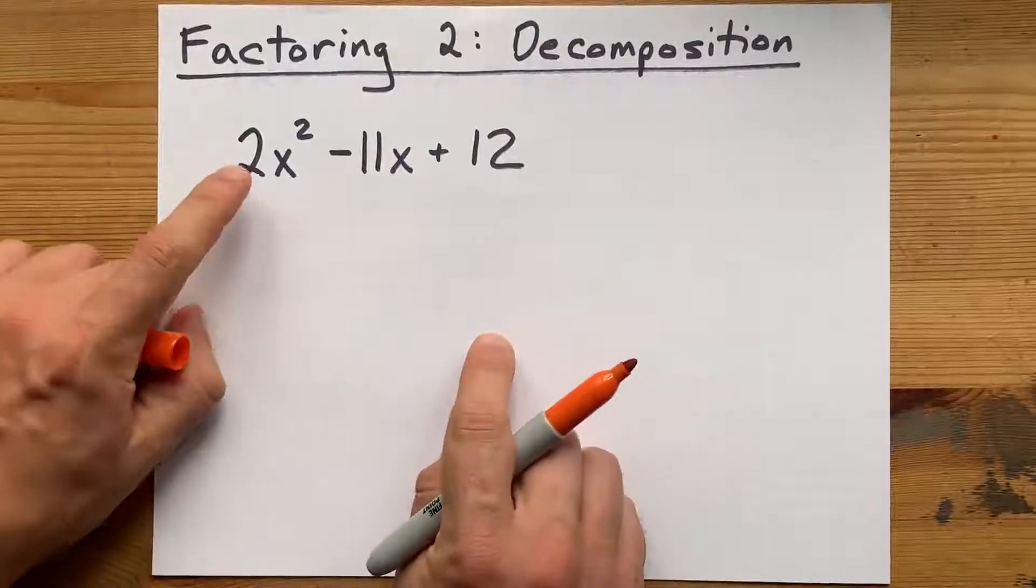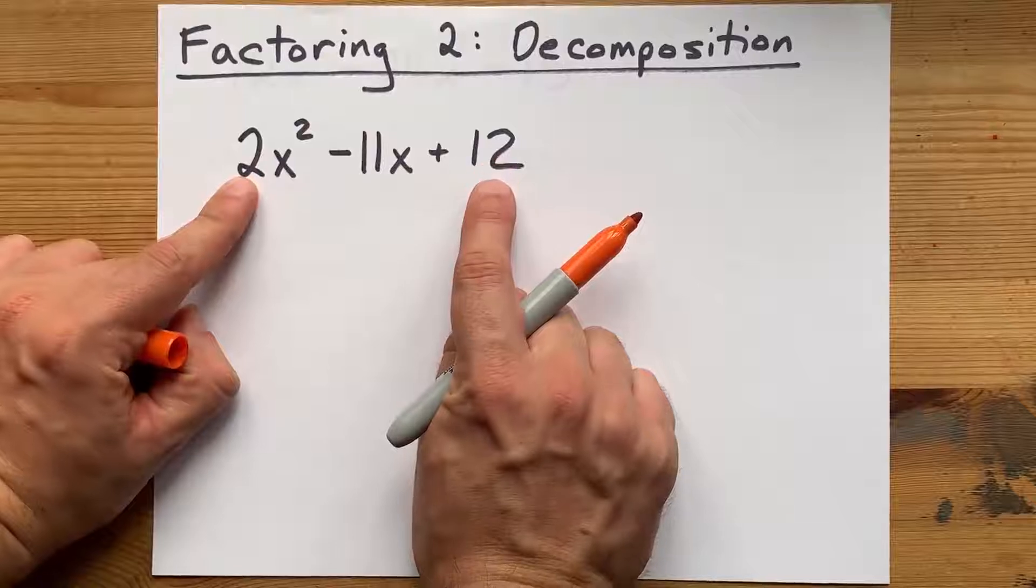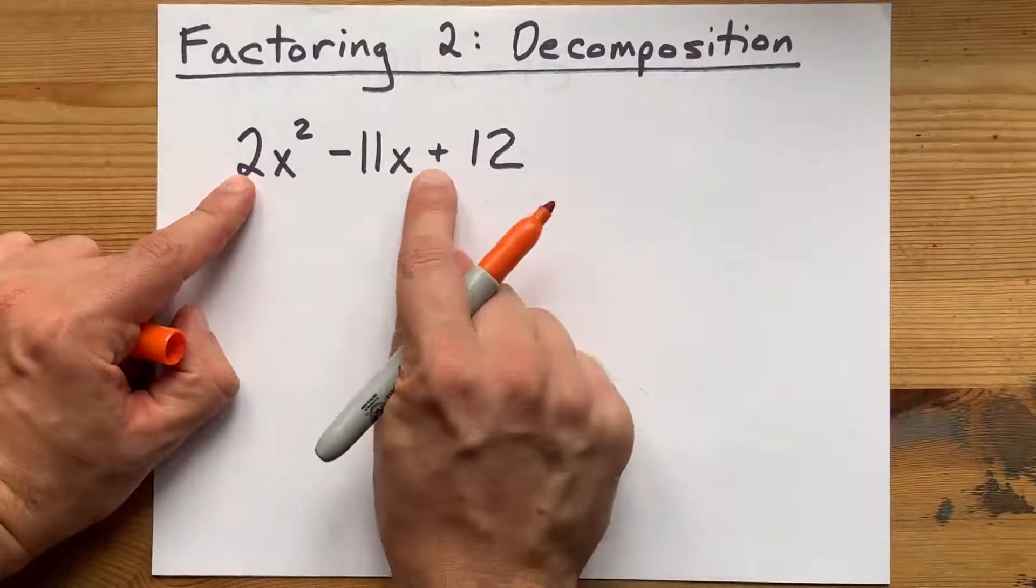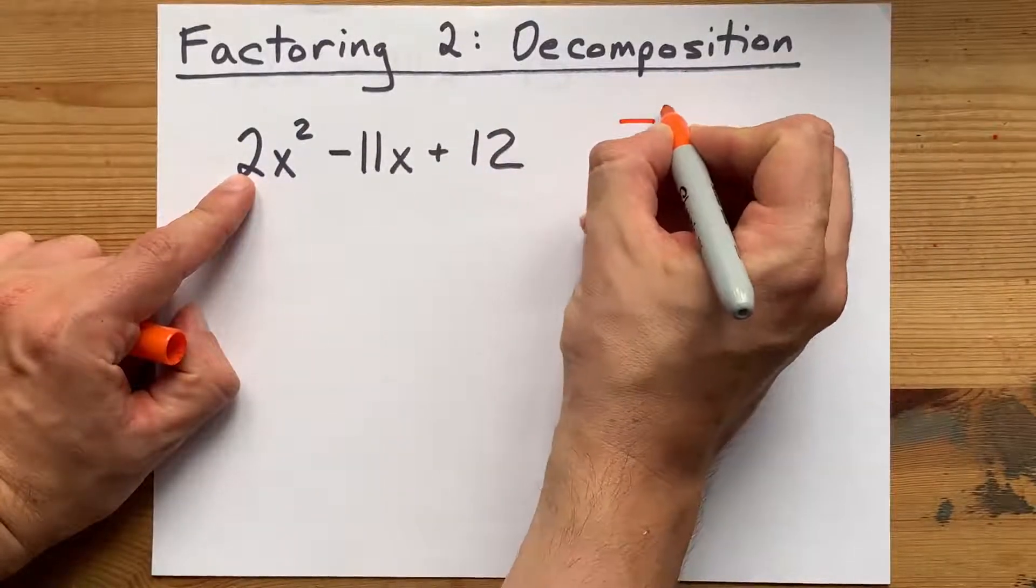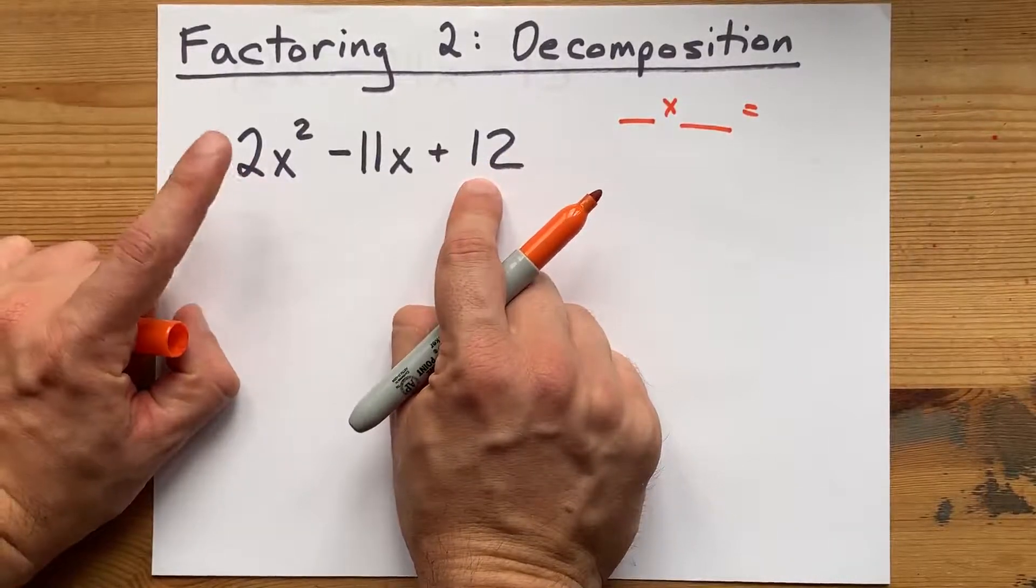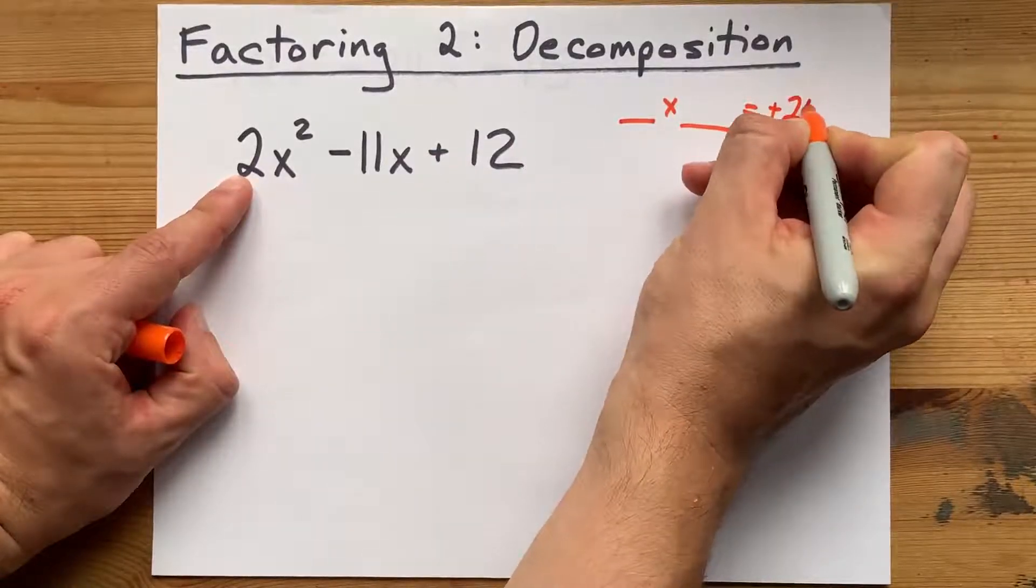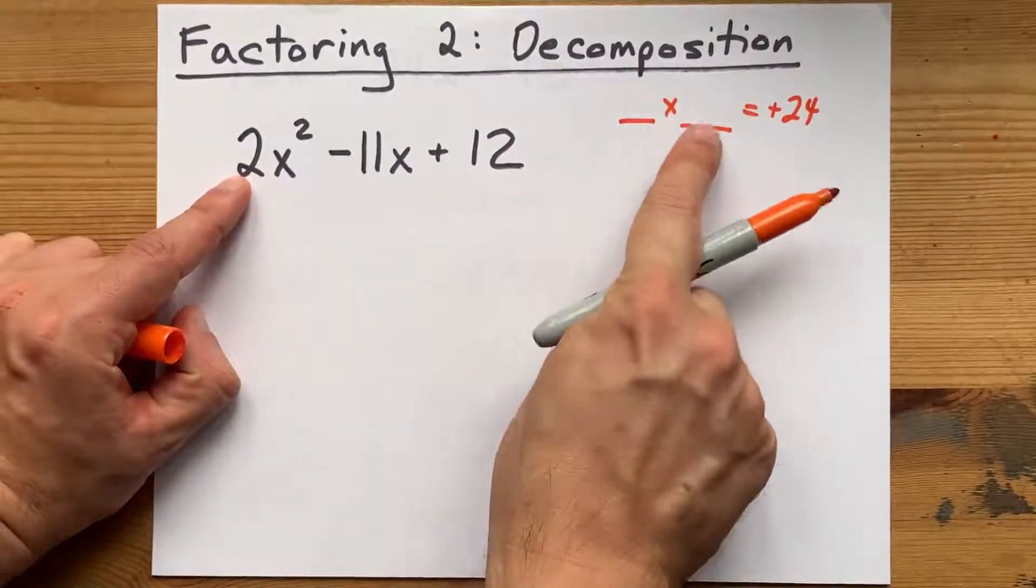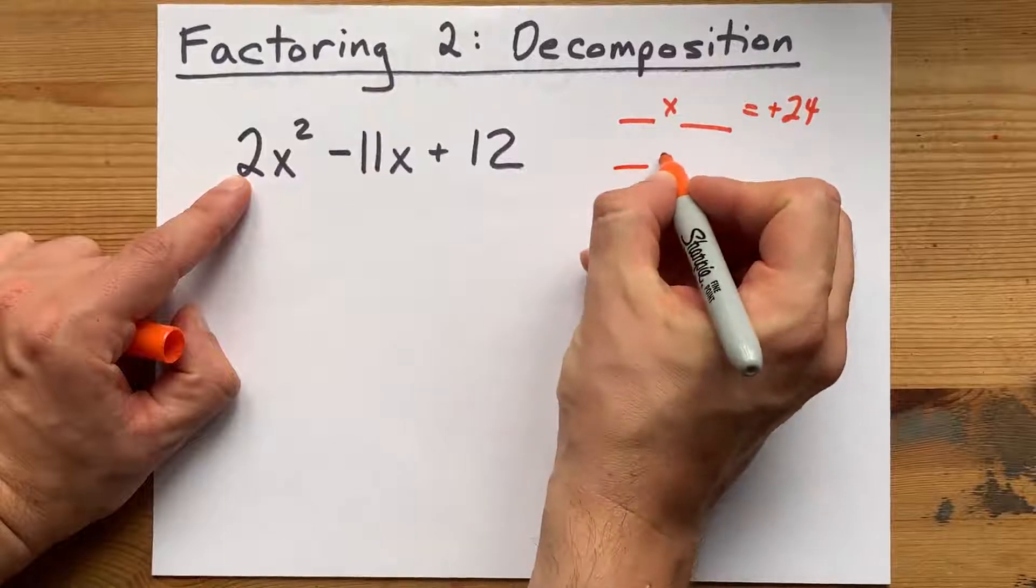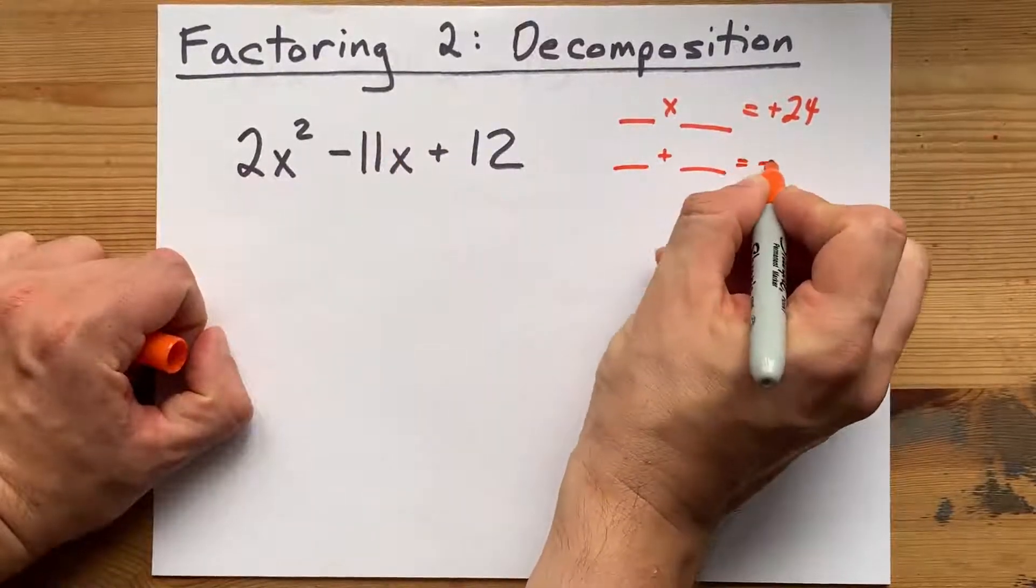Step one, take the number at the beginning and end, that's 2 and 12. I need two numbers that multiply to make whatever the product of those two is. 2 times 12, that's positive 12, is positive 24. And those same two numbers that I find have to add to give me the middle number, negative 11.